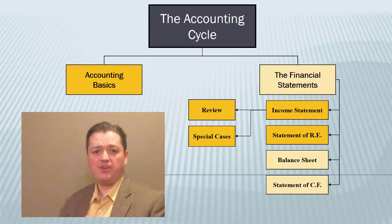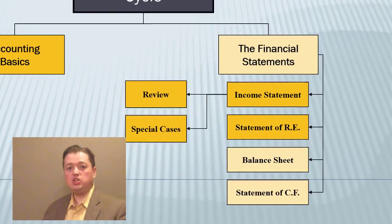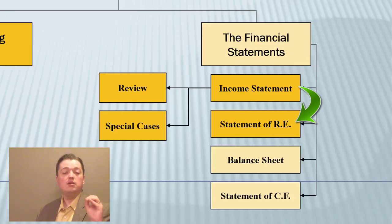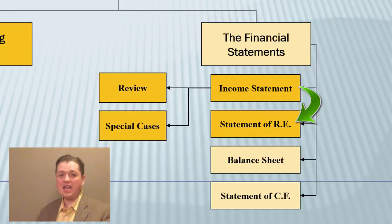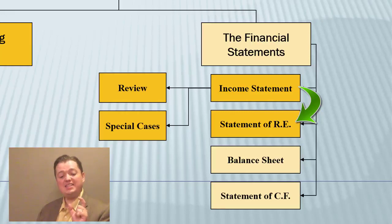The reason we talk about the financial statements in this particular order is because this is the way we do them when we're actually doing accounting. Once we finish our adjusting entries and an adjusted trial balance, we use those numbers to make an income statement. Once I have my income statement and particularly net income, I can use that number to calculate retained earnings in my statement of retained earnings. I start with beginning retained earnings, add in net income, subtract dividends, and that gives me the ending retained earnings balance. Once I have that, I can put it with my other permanent accounts in my balance sheet.